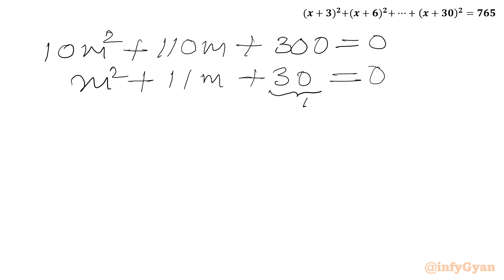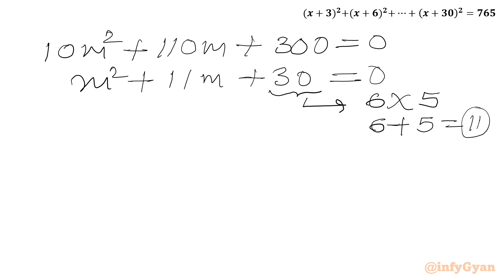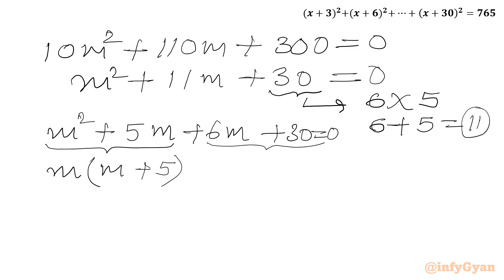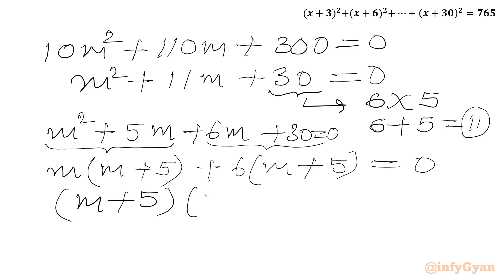Now if we factorize 30, we can consider 6 times 5, and 6 + 5 = 11, which gives our middle term. So I can split 11m as 6m + 5m: m² + 5m + 6m + 30 = 0. Taking m common from the first two terms gives m(m + 5), and taking 6 common from the last two gives 6(m + 5), so we get (m + 5)(m + 6) = 0.